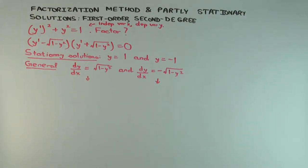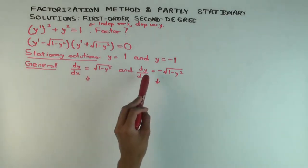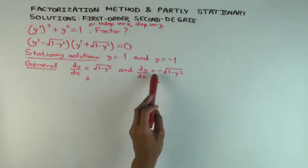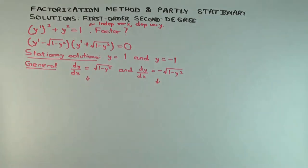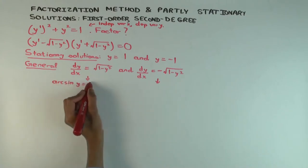Now let's try to see what the general solution is for each one. For this one, you have dy/dx equals square root of 1 minus y squared. For the other, dy/dx is negative square root of 1 minus y squared. What does this solve to? Arc sine y equals x plus c1.